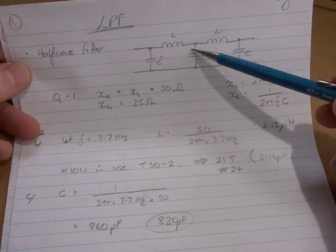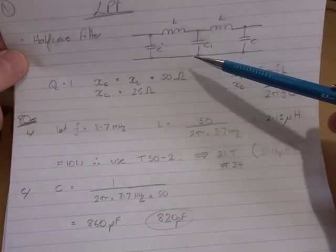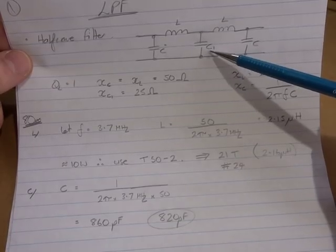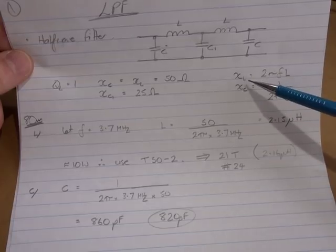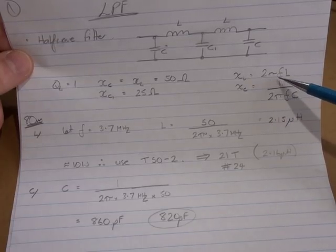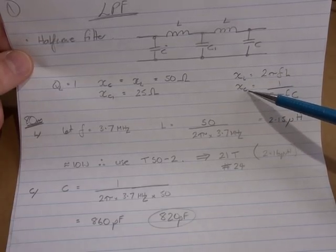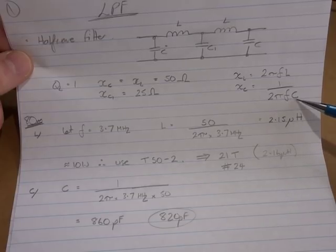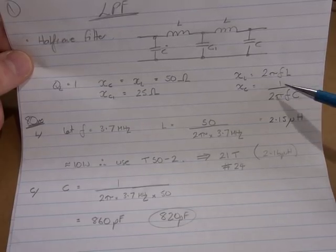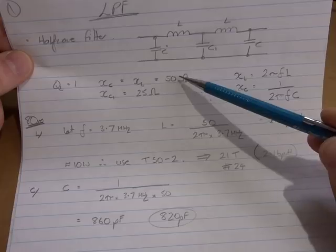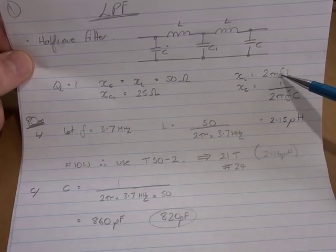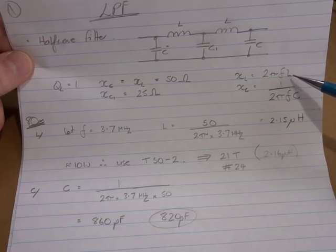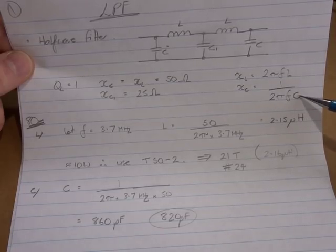Now this center capacitor here is a little bit different. I'll just call that C1, and its capacitive reactance is only 25 ohms. And as we know, our inductive reactance is 2πfL and our capacitive reactance is 1 over 2πfC. So therefore, by substituting in 50 ohms for our inductive and capacitive reactance and our frequency of operation, we can then solve for the unknown inductance and capacitance.